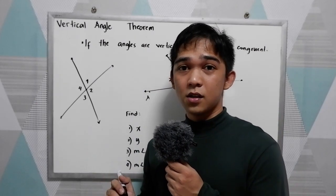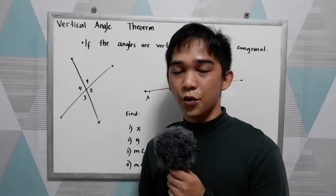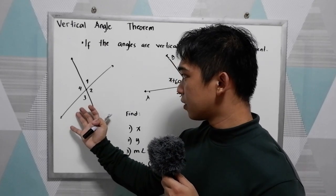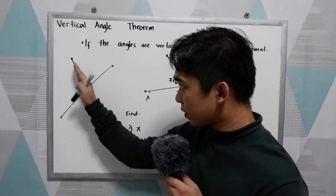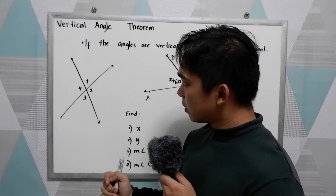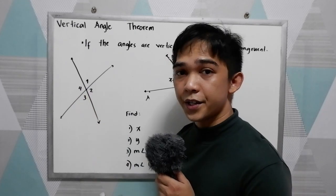In other words, if two angles, vertical angles are congruent or equal. Let's say we have this illustration. We have angle 1, angle 2, angle 3, and angle 4 here.